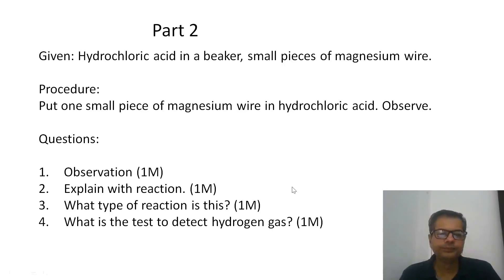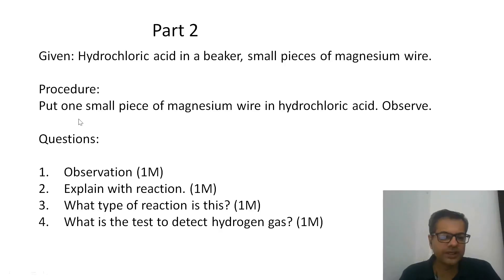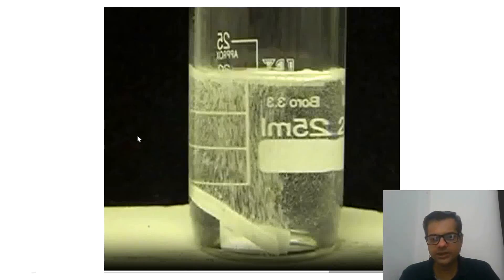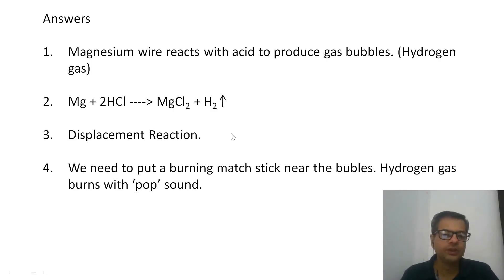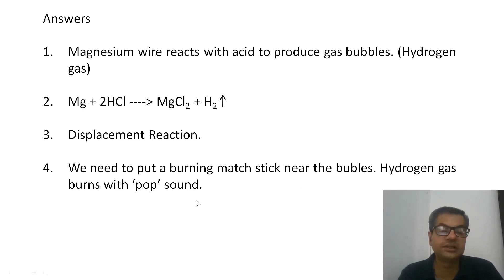For part two: given hydrochloric acid in a beaker and small pieces of magnesium wire. Procedure: put one small piece of wire in hydrochloric acid and observe. You should see lots of bubbles — gas bubbles coming out. Observation: magnesium wire reacts with acid to produce gas bubbles of hydrogen gas. Reaction: Mg + 2HCl → MgCl2 + H2↑. Draw an arrow indicating the gas is evolved. It is a displacement reaction. The test to detect hydrogen gas: hold a burning matchstick near the bubbles — hydrogen gas burns with a pop sound.